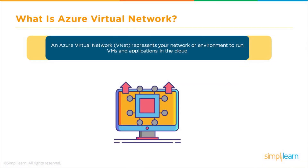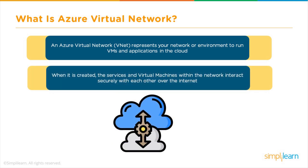An Azure VNet or virtual network represents your network environment to run VMs and applications in the cloud. When it is created, the services and virtual machines within the network interact securely with each other over the internet. You can consider it as a virtual cloud space virtually assigned to users or an organization for dedicated use. For example, if you need to create instances or virtual machines on Azure and connect them with on-premises servers, you would require a virtual network.